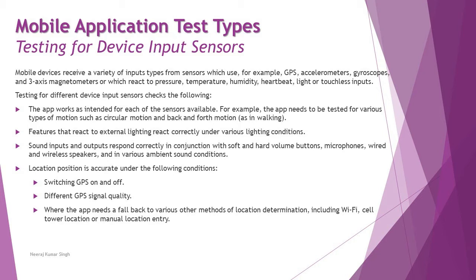Another test is ensuring that features reacting to external lighting respond correctly under various lighting conditions. Auto-brightness, for example, means that depending on the background light or the environment you are in, the screen brightness automatically adjusts to show the text to you. This is another sensor behavior that needs to be tested.